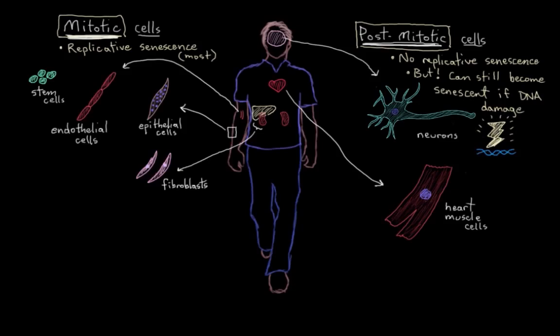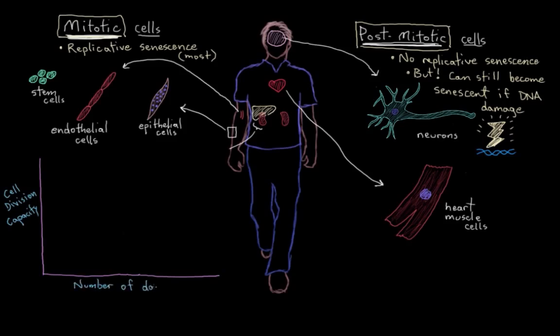I just want to draw out a graph here to represent our different types of cells and their tendencies with division. Here's our y-axis and x-axis. On the y-axis, I want to put cell division capacity, the capacity of this cell to divide. And on the x-axis, I'll put number of doublings, which is essentially how many times the cell has divided already.